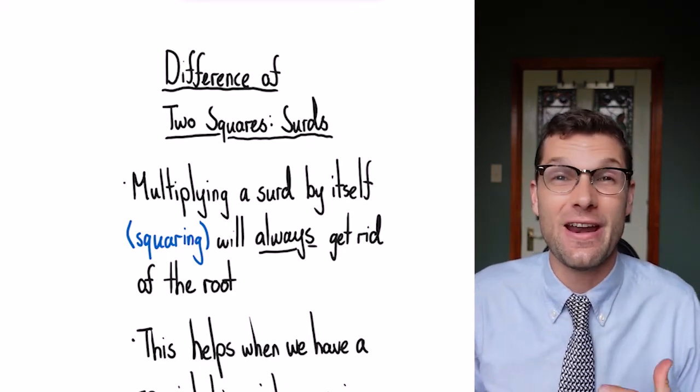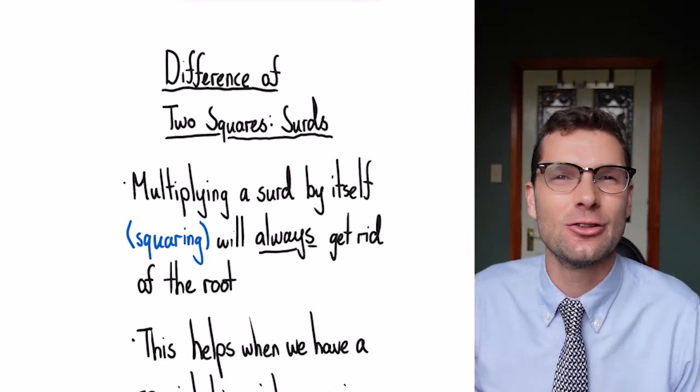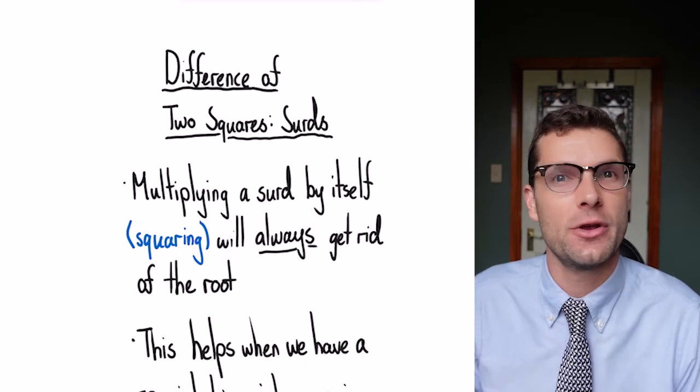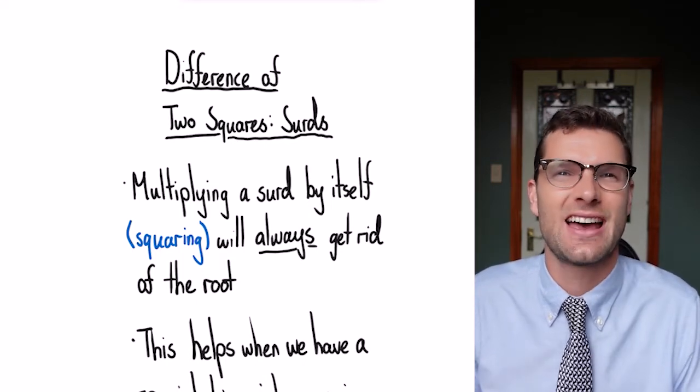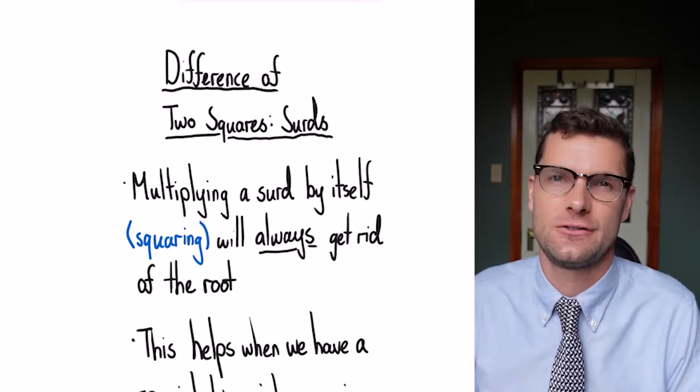What's good everyone, you're back with Jono for another quick math lesson. Today we're going to look at a special type of binomial expansion involving surds. It's called the difference of two squares.